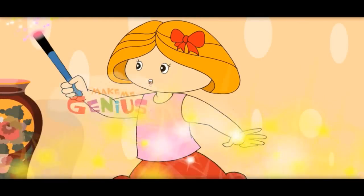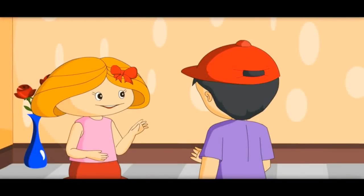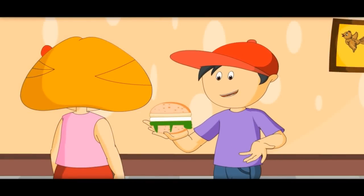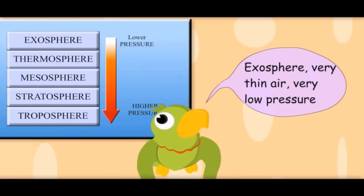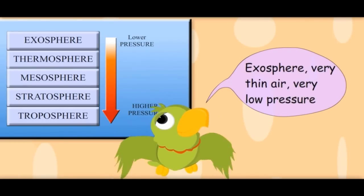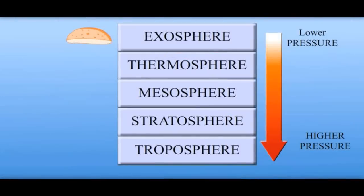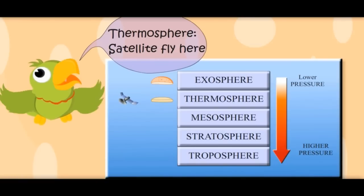Now we would see the different layers of the atmosphere. There are five layers of the atmosphere, like five layers of this burger. The top layer has very thin air and very low pressure — this is called the thermosphere. Satellites fly in this layer.